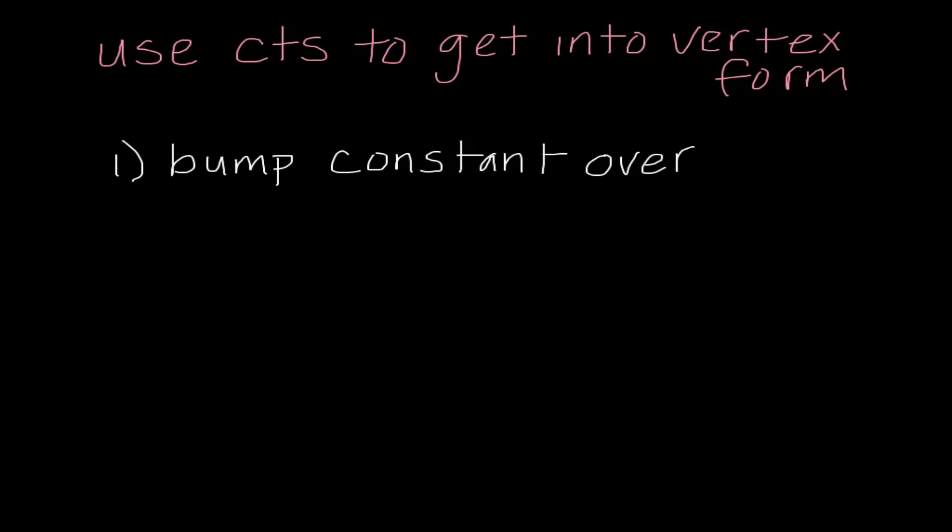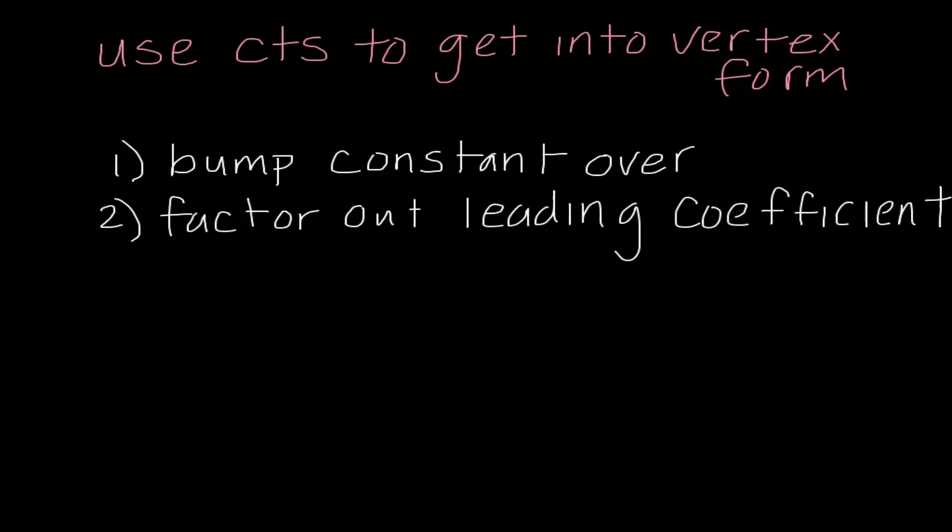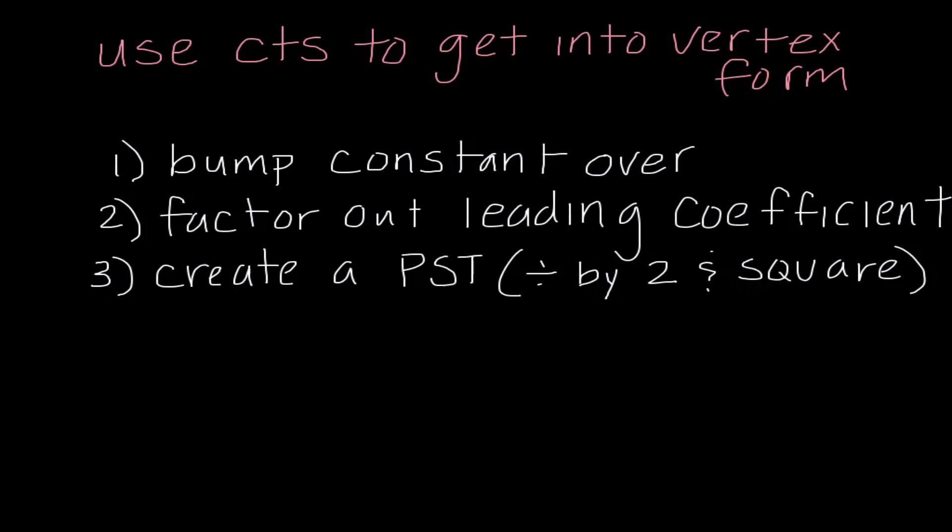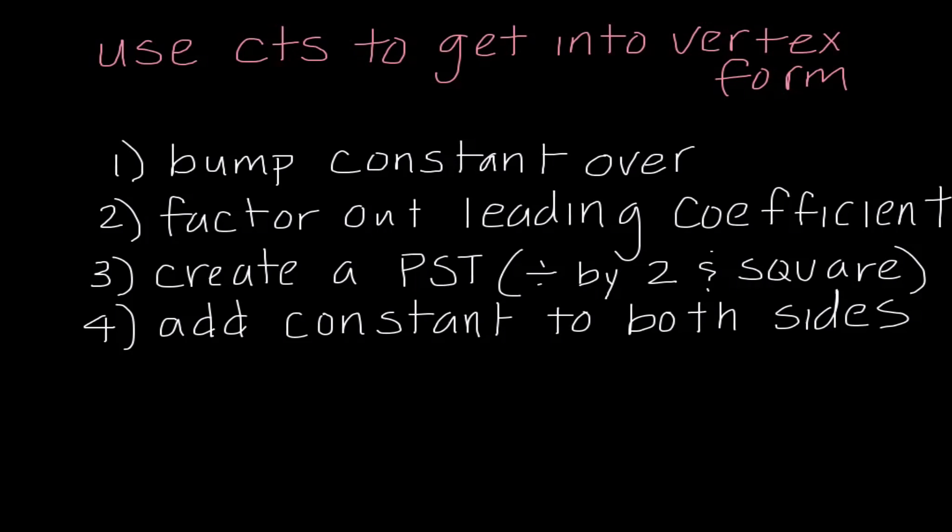The first thing we're going to do is bump our constant over — we write the x squared and x term in parentheses and move the constant outside. Second, we factor out our leading coefficient. In our previous lecture we divided by the leading coefficient when solving by completing the square; here we just factor it out. Then we create a perfect square trinomial by taking the middle coefficient, dividing by 2, and squaring it. Once we know what we're adding, we balance the equation by adding that constant to both sides.